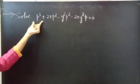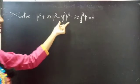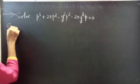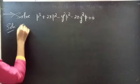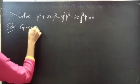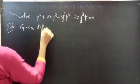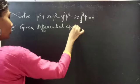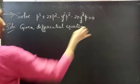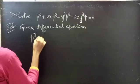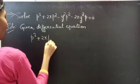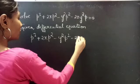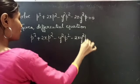Problem: Solve P cubed plus 2x P squared minus y squared P squared minus 2xy squared times P equals zero. The given differential equation is P cubed plus 2x P squared minus y squared P squared minus 2xy squared P equals zero.